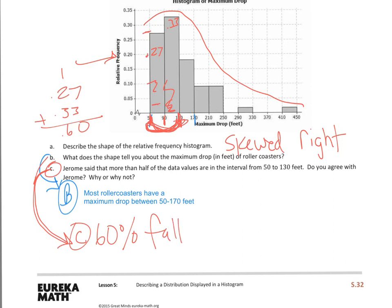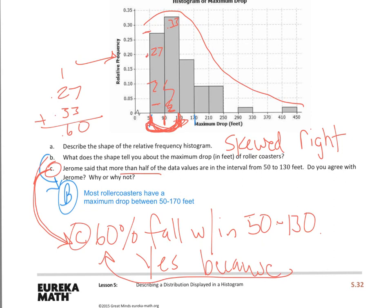I see that I'm getting about 6 tenths or 60 hundredths, which translates to 60%. And 60% fall within 50 to 130. Meaning, if we added up all of our bars on this histogram, we should get 1.0, or one whole. So that's 60%. And Jerome had said more than half. So do I agree with him? Yes. Because 60% fall within 50 to 130.